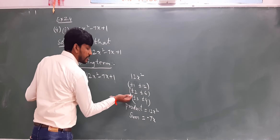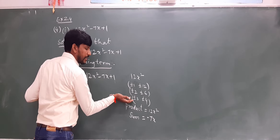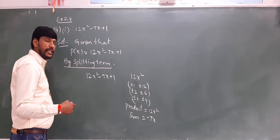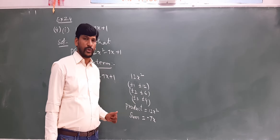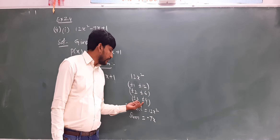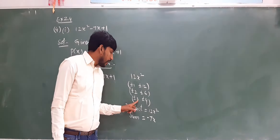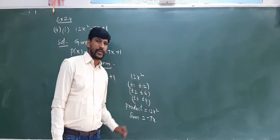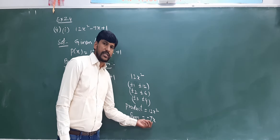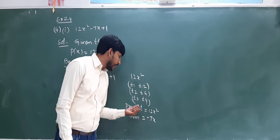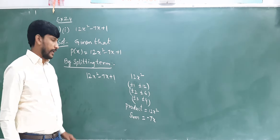Out of these three pairs, we are going to select plus or minus 3 and plus or minus 4. Because 3 plus 4 equals 7, and 3 times 4 is 12. The product of these will become positive 12x², and the sum of these two values will become minus 7x. To get minus 7x, we take both minus 3 and minus 4.